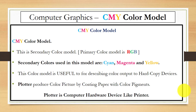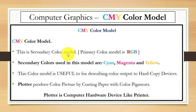Hello, in this video you will learn about the second color model, that is the CMY color model. This is the secondary color model, and the primary color model we covered in the previous video is the RGB color model, where R is red, G is green, and B is blue.